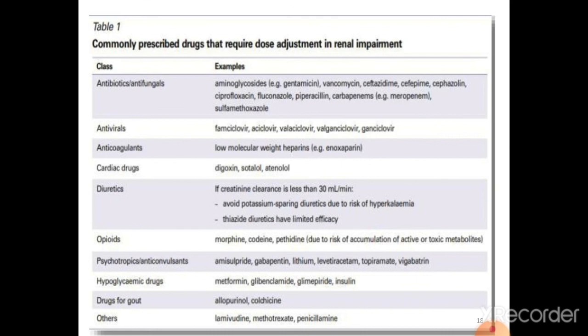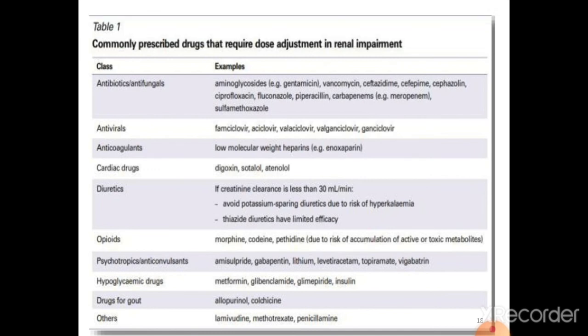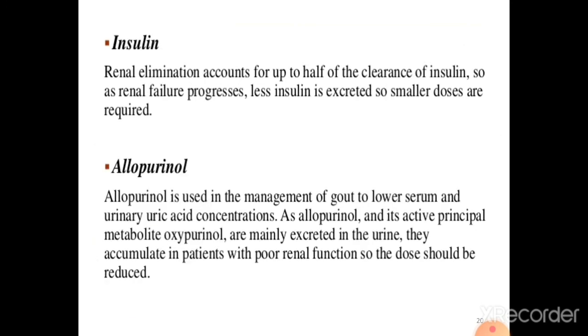Some drugs that require dose adjustment in renal impairment include opioids, diuretics, cardiac glycosides, drugs used in gout such as allopurinol, morphine, antibiotics, and antifungals. These drugs may need to be adjusted according to their dose requirements when renal impairment takes place in the body.